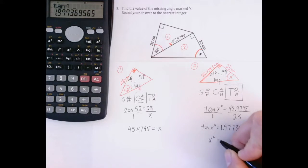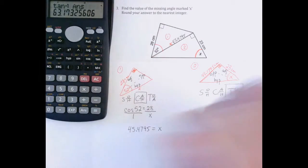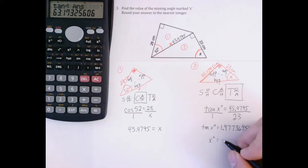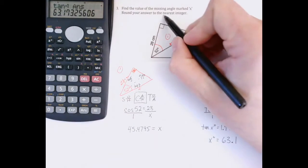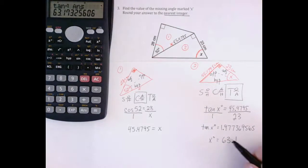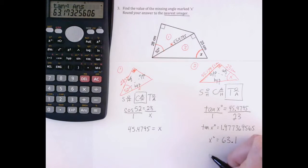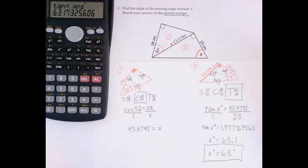So x degrees, once I press equals on my calculator, 63.1 to the nearest integer. Don't forget they were asking. I look one spot to the right. This is under 5. So I leave the number just the way it was. x equals 63 degrees. That's my final answer.